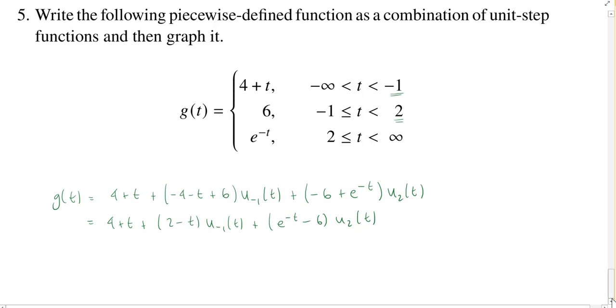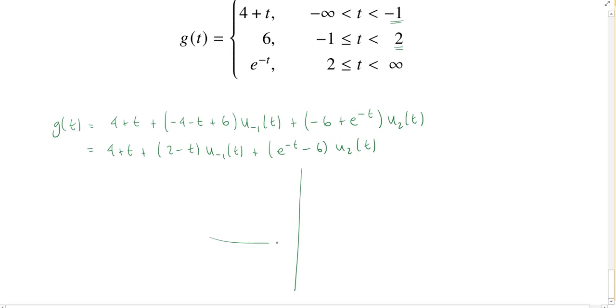Let's graph it. Again, the special points are going to be at negative 1 and at 2. We start with the line 4 plus t. So that's an increasing line going up at a slope of 1. When we get to negative 1, negative 1 plus 4 is 3. So we have the point at (-1, 3). The slope is 1, so if I went back to negative 2, it would go down by 1 to 2. At negative 1, it might do something different, so let's put a hole and draw our straight line going down.